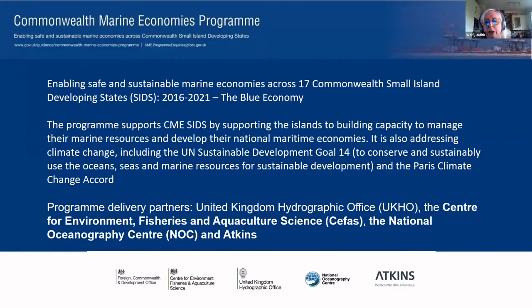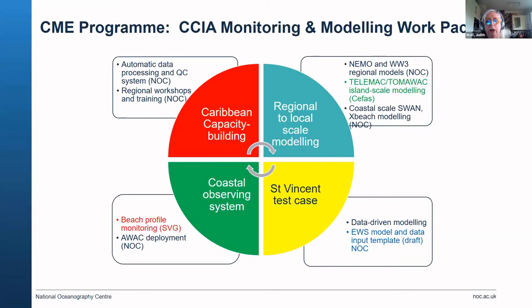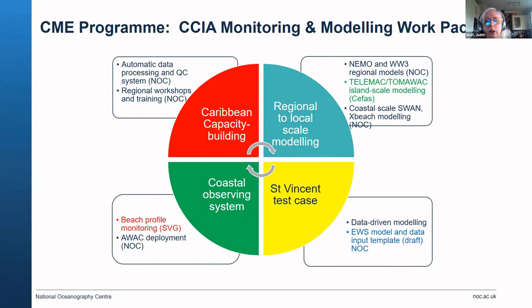The programme delivery partners were the UK Hydrographic Office, the Centre for Environment, Fisheries and Agriculture Science, the National Oceanography Centre, and Atkins. We started at the beginning looking at issues around climate change impact and adaptation, and where we could bring tools from monitoring and modelling to help get data and understanding. We've developed software for automatic data processing and done regional training workshops.